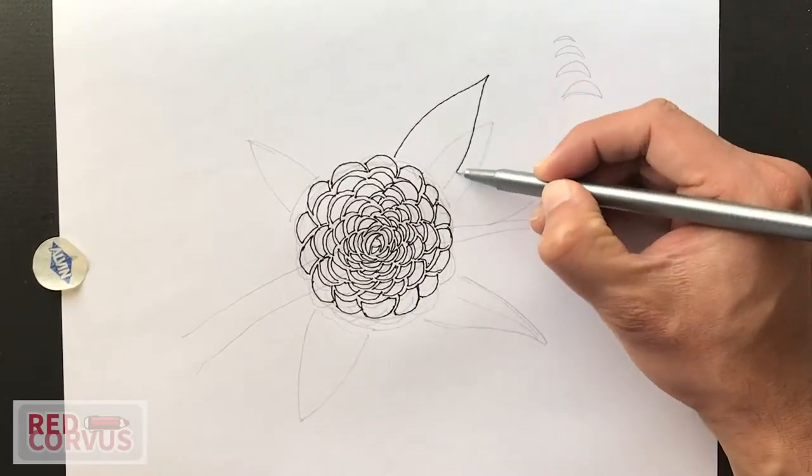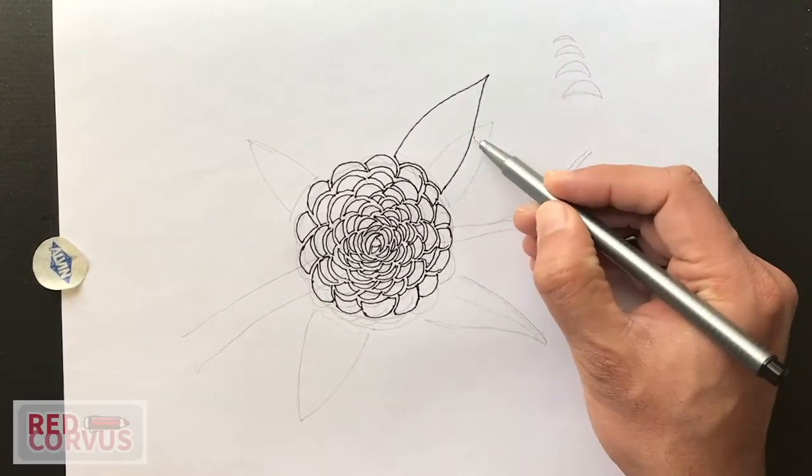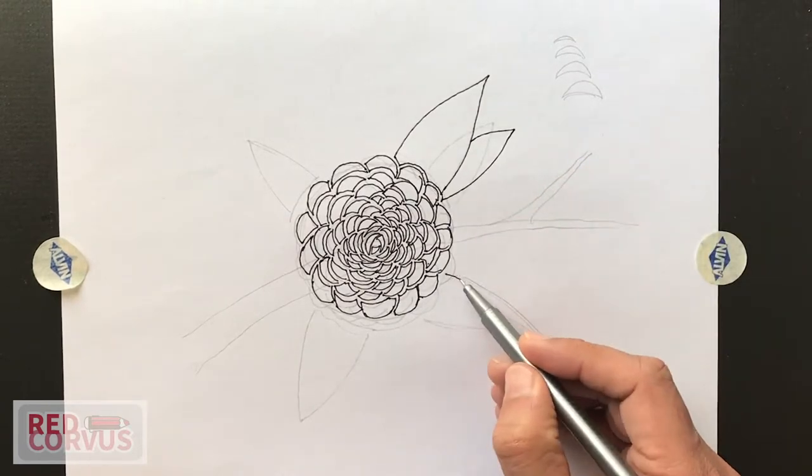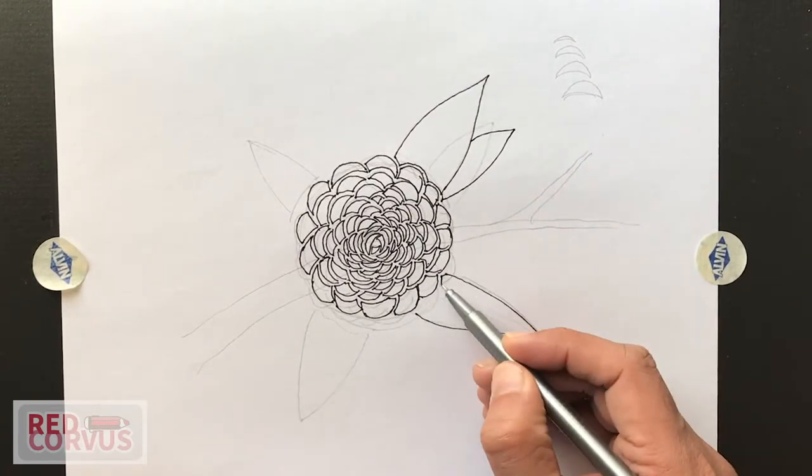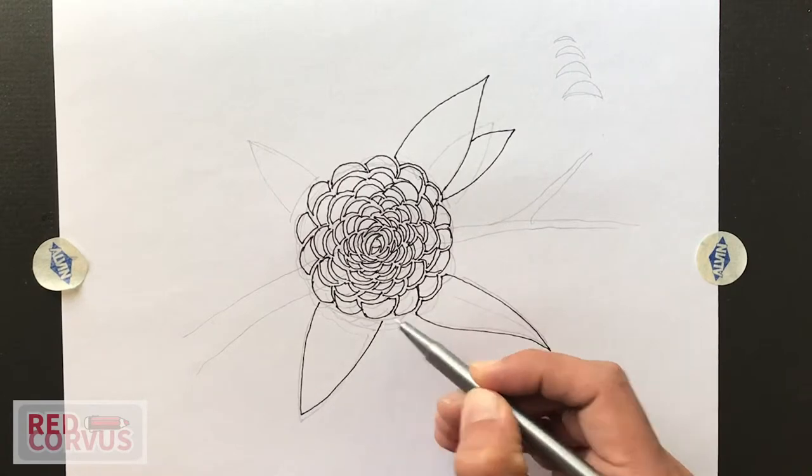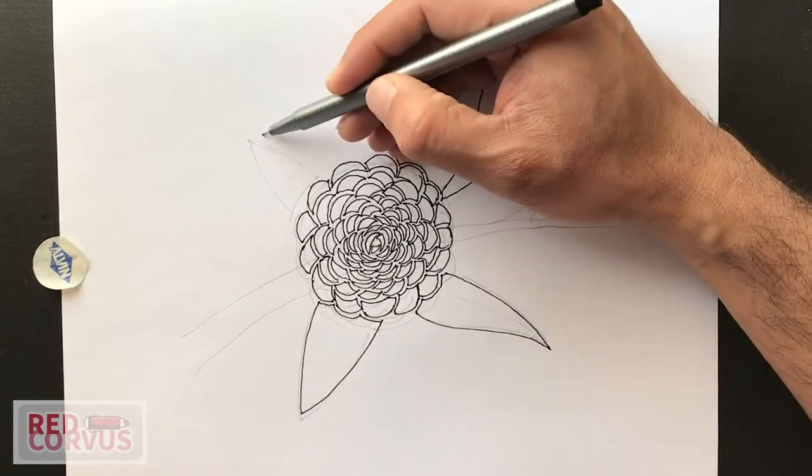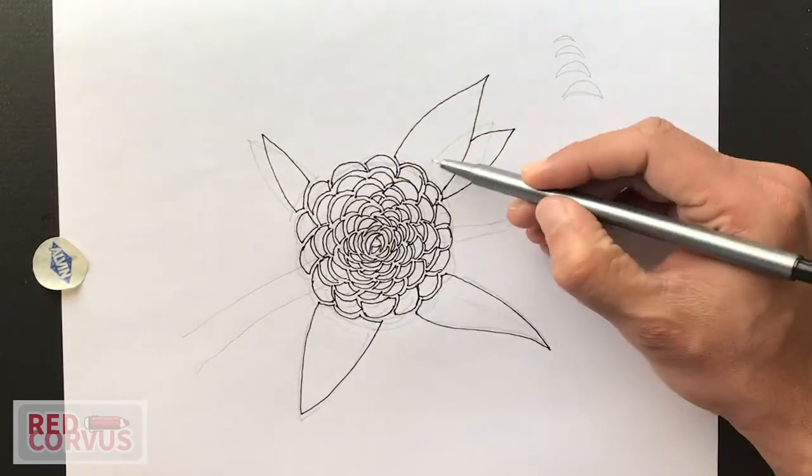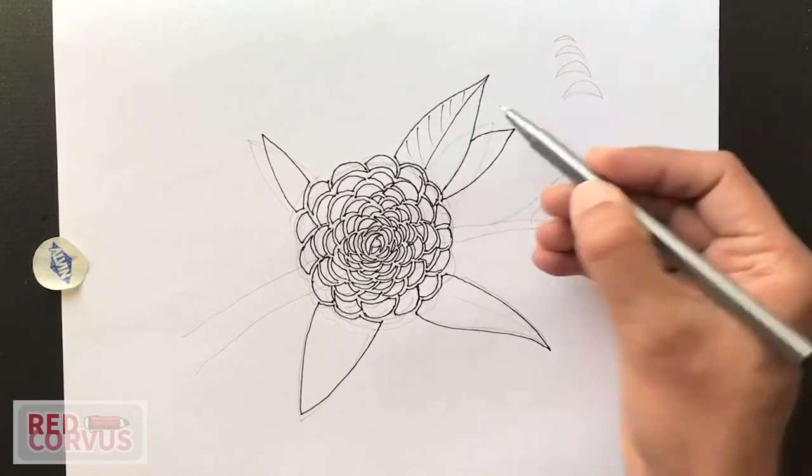Now I'm going to ink the leaves and also leave a little gap between the edge of the leaf and the petals so that it reads properly. And then add some detail to the leaves.